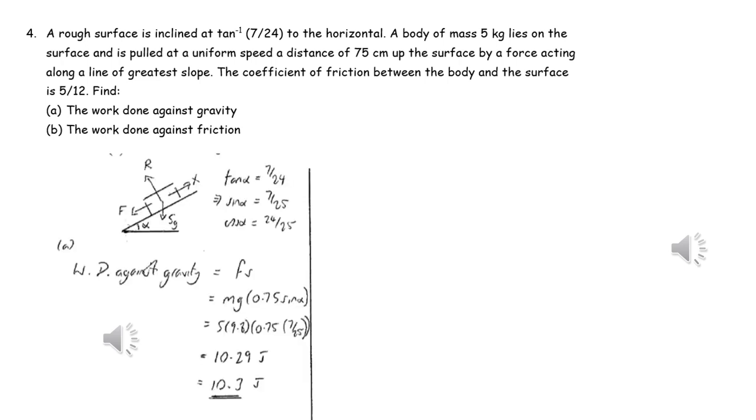To find the work done against gravity we will need to multiply the weight of the object by the vertical distance risen.